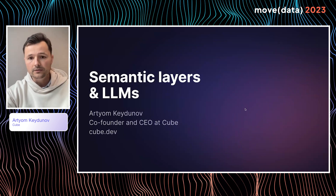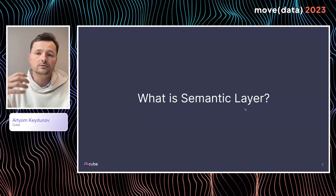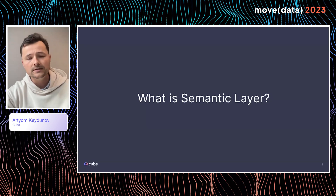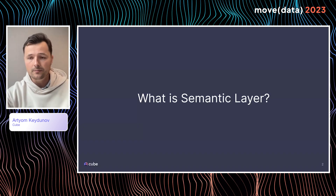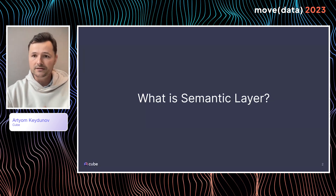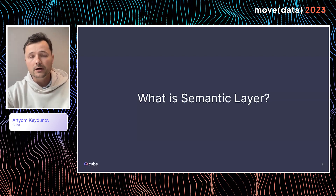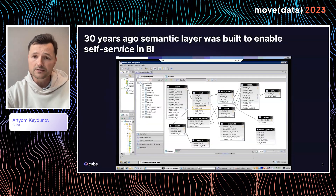Before we talk about them being together, I wanted to talk briefly about semantic layers separately and LLMs separately. We'll start with what a semantic layer essentially is. In the last two or three years, a lot of people over the internet were talking about semantic layers and the need for universal semantic layers. Many companies have been started to address this need, Cube included. But really the semantic layer as a concept was developed many years ago — about 30 years ago, to be specific, in the 90s, around 1992, by Business Objects.